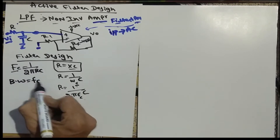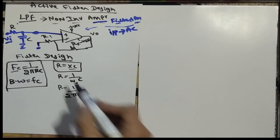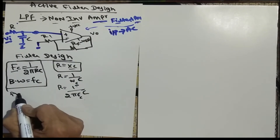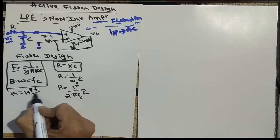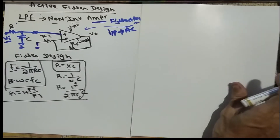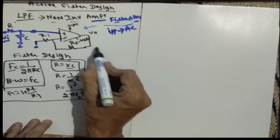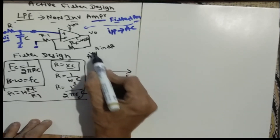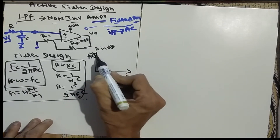For amplifier design in the non-inverting configuration, the gain A = 1 + Rf/R1. For the waveform, we plot gain in dB versus frequency. The output V0 equals A times Vi, so gain is V0/Vi. Up to the cutoff frequency, the gain remains flat, and after that it starts to fall.